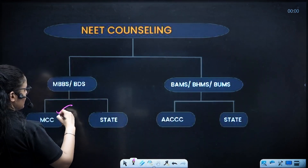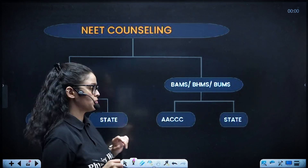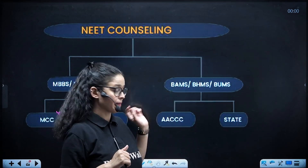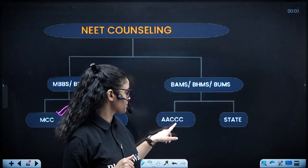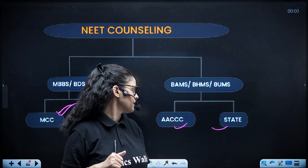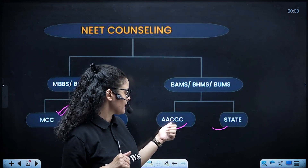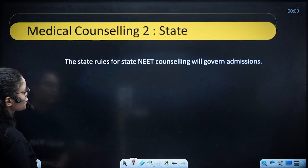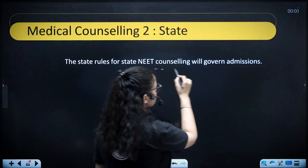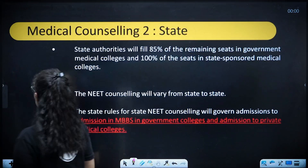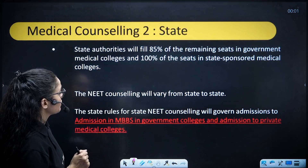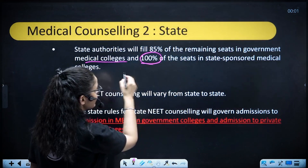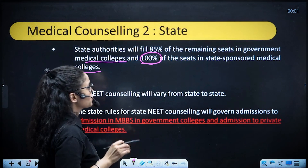For MBBS and BDS, you have seats under MCC and the state quota website. For BAMS, BHMS, and BUMS, you have to fill the registration form on this AACCC website. States also conduct their own counseling for AYUSH. State rules for state AYUSH counseling will govern admissions — the state authority fills 85% of remaining seats in government medical colleges and 100% of seats in state-sponsored medical colleges.